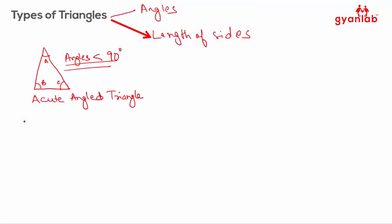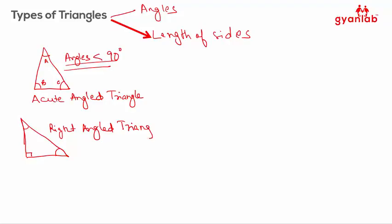If you have a triangle where one of the angles is 90 degrees and the others are acute, this becomes a right angled triangle. So if angle A is equal to 90 degrees, it is a right angle triangle. If any of the angles is a right angle, it's called a right angle triangle.